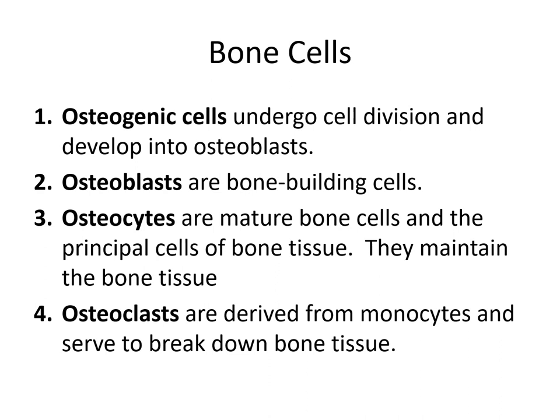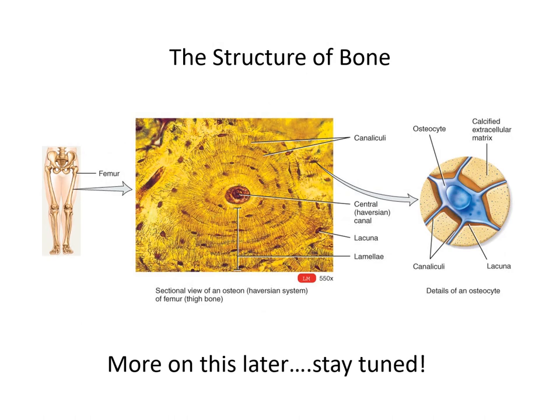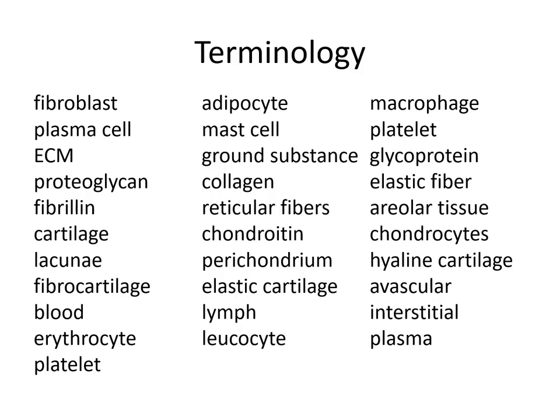We could use these same endings with respect to cartilage cells as well. Chondro means cartilage, so we can have chondrogenic cells, chondroblasts, chondrocytes, and chondroclasts. We'll talk about those more in our next topic when we discuss the development of cartilage and the skeleton. That's it for this topic — our next topic is the skeleton, and we'll spend quite a bit of time looking at bone then.